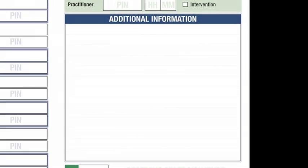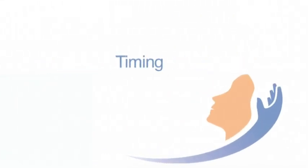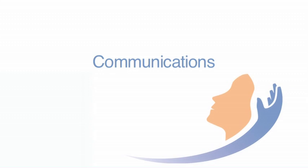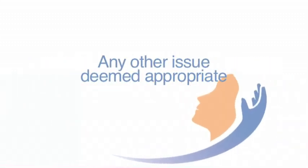Additional information: record any information which you deem to be relevant to this episode of care and for which there was either insufficient space or no appropriate section. Clinical audit is a quality improvement process that seeks to improve patient care and outcomes. Tick the CA panel in the event of there being a strength or weakness on this patient incident worthy of highlighting, or in the event of an issue that requires follow-up and discussion. The clinical audit strength and weaknesses identification criteria are: appropriateness, timing, skills or knowledge, equipment, communications, documentation, and any other issue deemed appropriate. Record in additional information as appropriate.